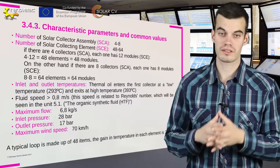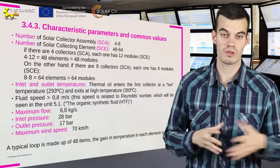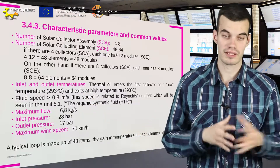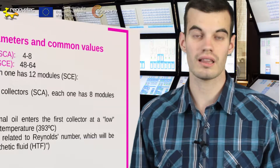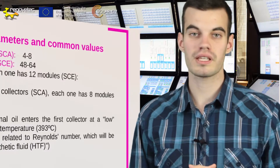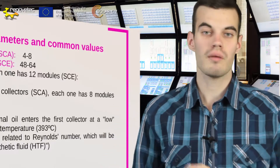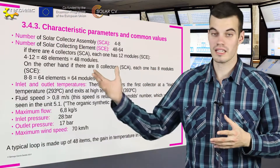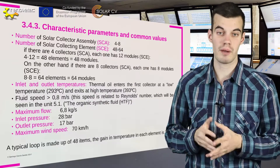These temperatures will be discussed in unit 5.1. Other features include the maximum flow, the inlet pressure and outlet pressure. Drive pumps are located at the beginning of the solar field because they must support enough pressure to the HTF, since the HTF is going to lose some pressure because of the pipes and other systems. This concept will be seen in following units, especially in unit 5.4, the pumping system.